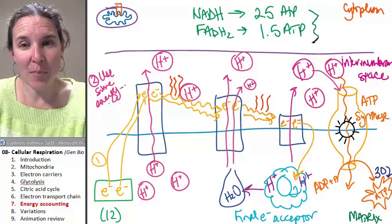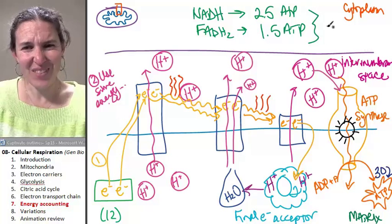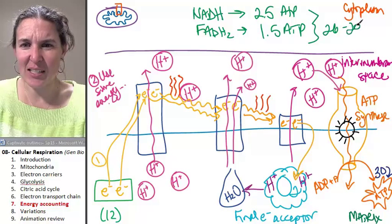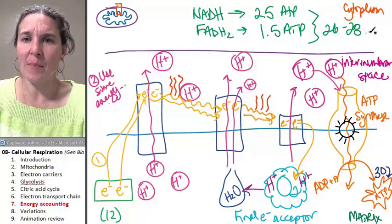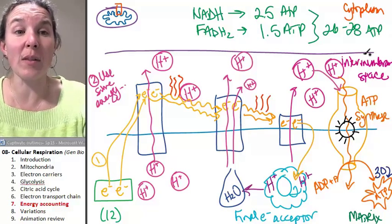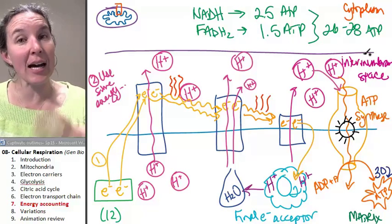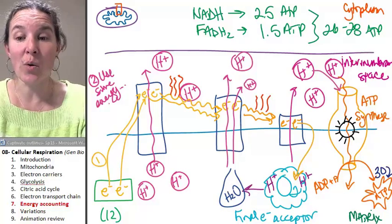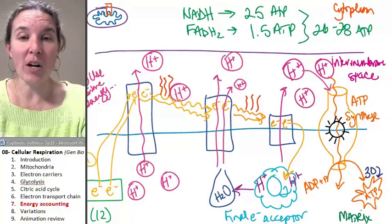If you add up the whole thing, you're going to get, I think, 26 to 28 ATPs total from this whole process. And again, it's not 100% efficient, so there is some variation there.